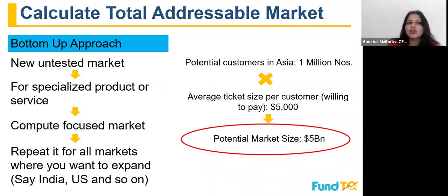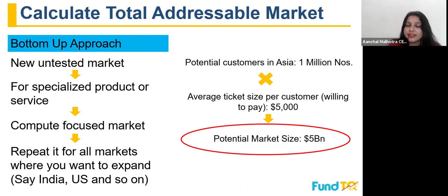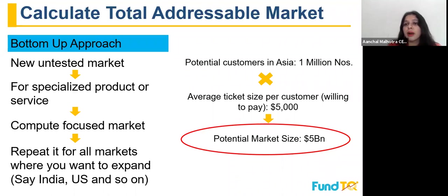The bottom-up approach is valid where there is a new, untested market and you do not have market size details — you can use this method easily. It is relevant for specialized products where the market is not validated and you've just taken a survey. You compute a focused market by finding the customers to whom you could sell the product. Note that total addressable market is bigger than the target market, which we'll discuss in detail.